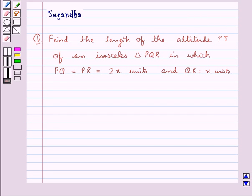Hello and welcome to the session. In this session we discuss the following question which says find the length of the altitude PT of an isosceles triangle PQR in which PQ = PR = 2x units and QR = x units.